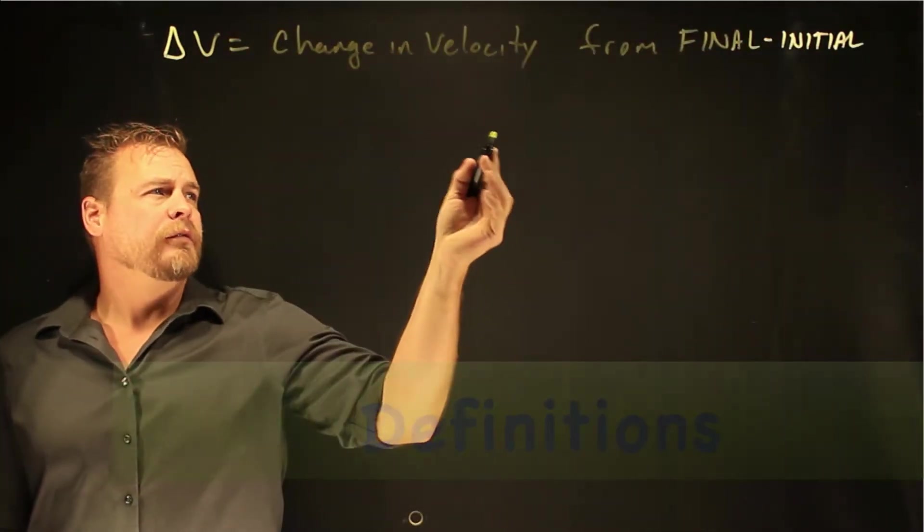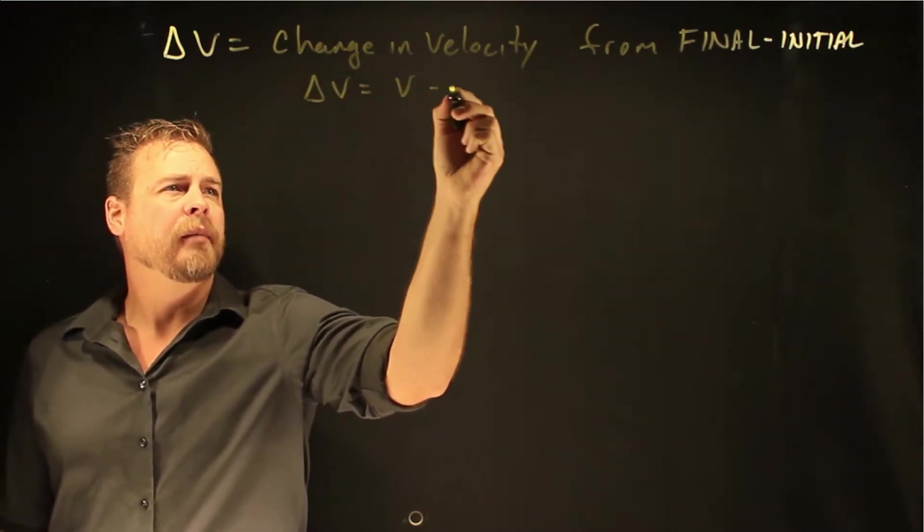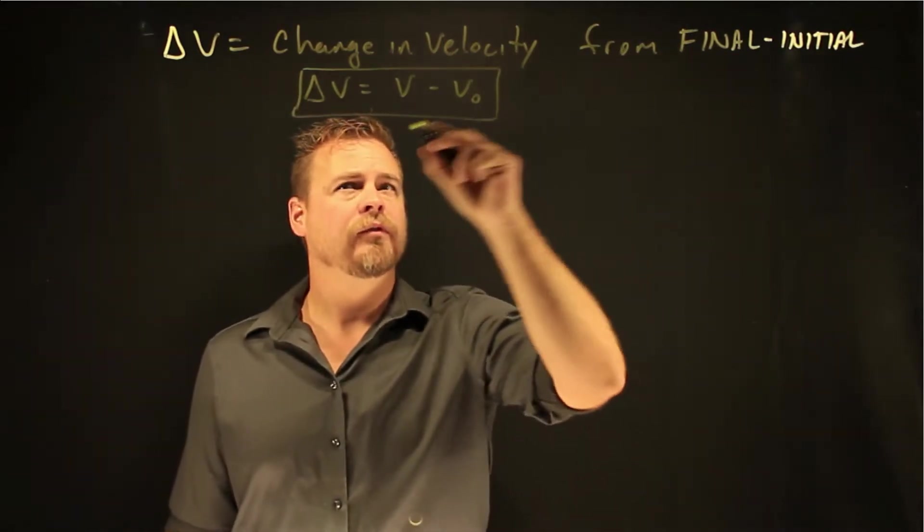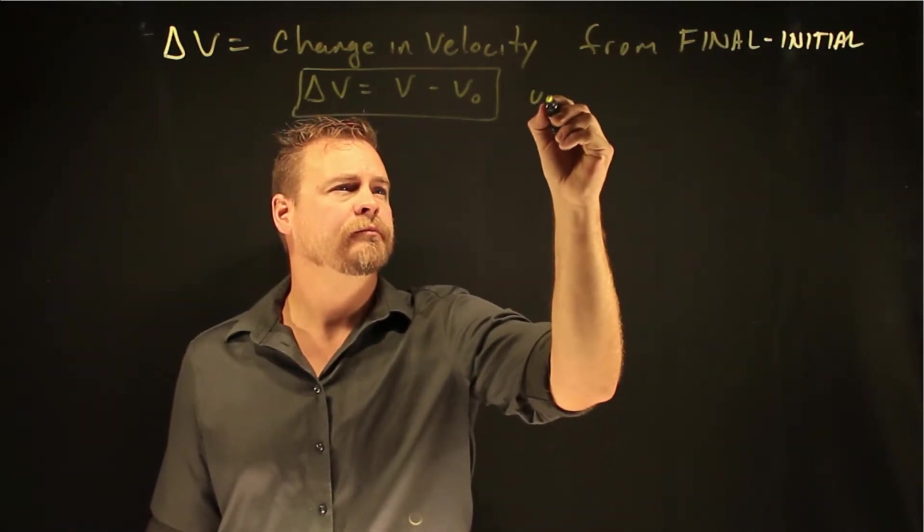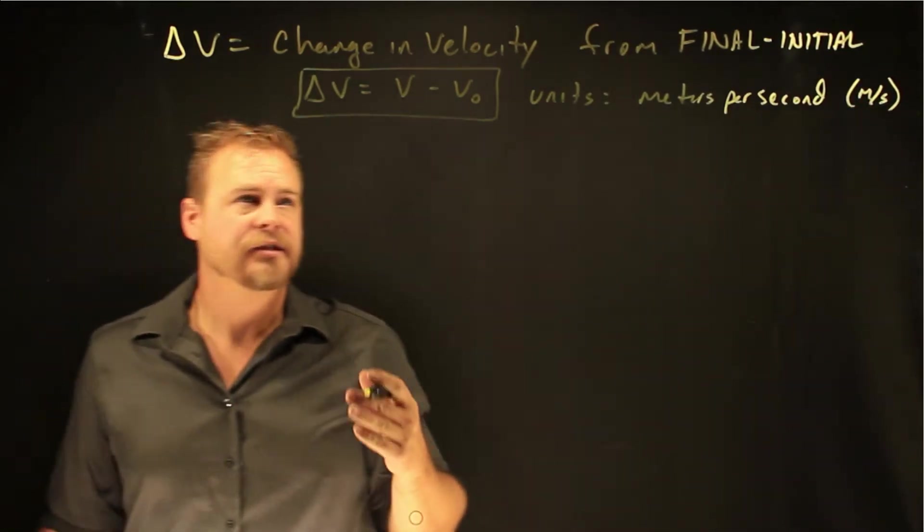The change in velocity from final minus initial can be described as v minus v naught. The units for change in velocity is the same as velocity.